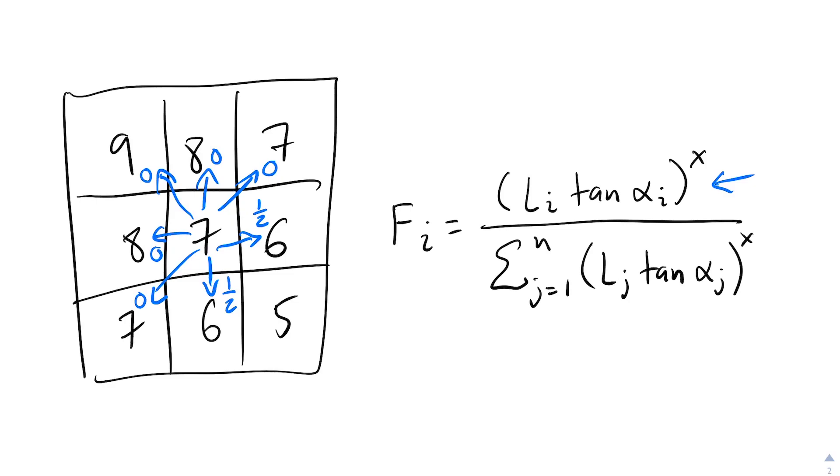Now for the neighbor with an elevation of 5, we know that Li is the square root of 2 divided by 4, and the tangent of alpha i is the square root of 2. So the result is also 1 half before normalization. Since all of the flows are equal, the dispersion exponent actually doesn't matter, and after normalization all of the flows are 1 third of the total flow.